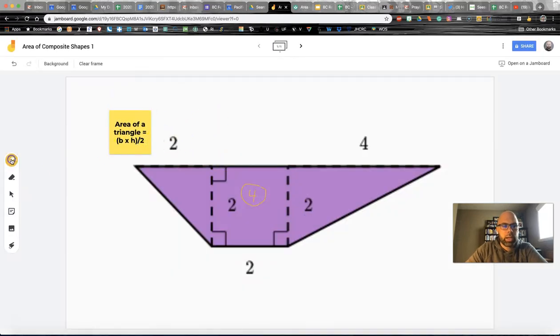So base times height is two times two divided by two. That's a lot of twos. Okay so we have four divided by two. You tracking with me? Equals two. Well that was pretty simple. Okay so we've got an area of two units squared right there.